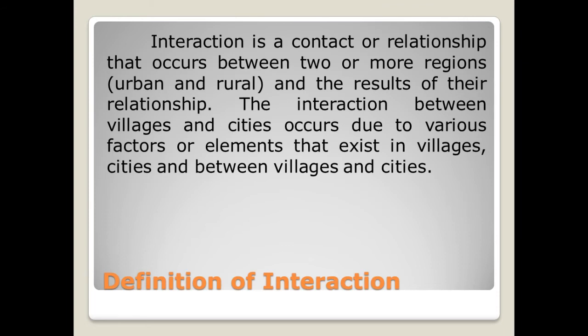Definition of interaction: Interaction is a contact or relationship that occurs between two or more regions — urban and rural — and the result of their relationship. The interaction between villages and cities occurs due to various sub-factors or elements that exist in villages, cities, and between villages and cities.